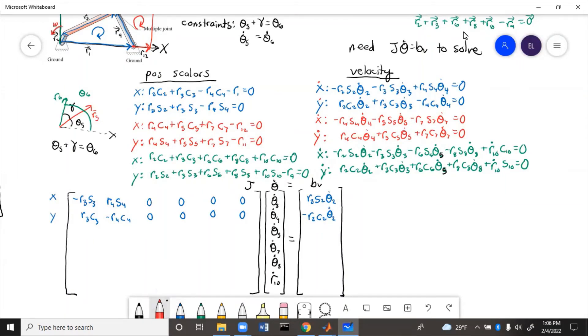So now we'll do the red. There is no theta 3 in the red. So we'll put a zero in that spot. And then we have theta 4, theta 5, and theta 7.